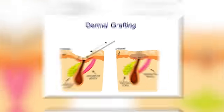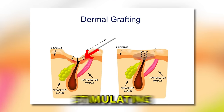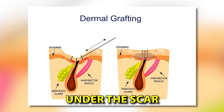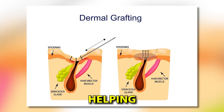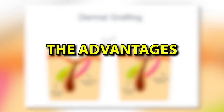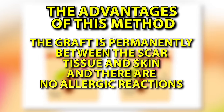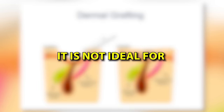Number five is dermal grafting. A dermal graft is placed beneath the scar, stimulating the area to produce more collagen and tissue under the scar, giving it support and helping to lift it over time. The advantages of this method are that the graft is permanently beneath the scar tissue and skin, and there are no allergic reactions. It is not ideal for large depressed scars.